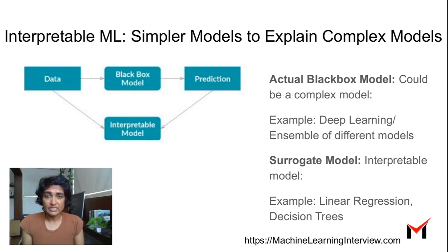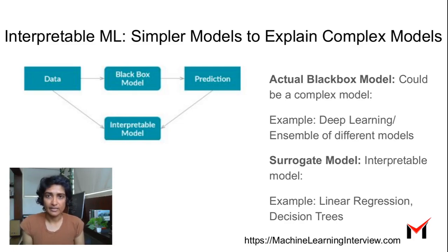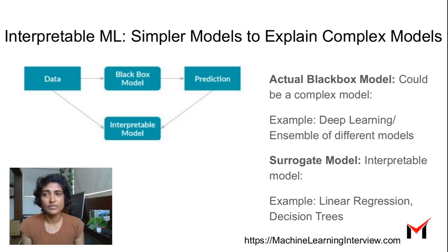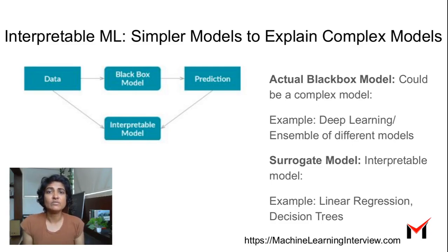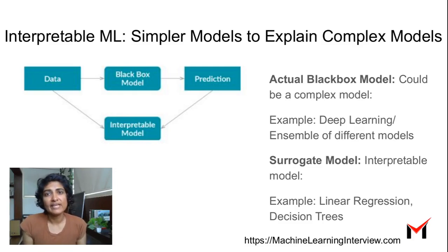But when you do this — say you've built a complex deep learning model and you use a linear regression model as an interpretable substitute to explain what features the deep learning model is giving importance to — the problem is that while a linear regression fit over the overall data might give you some insights on what features are important overall, it might not be very relevant for specific inputs.